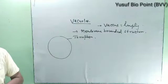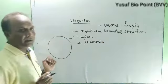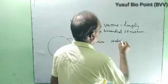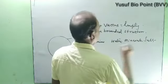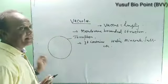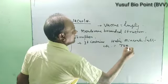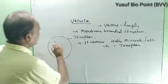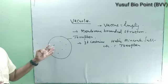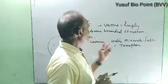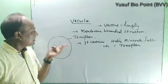The tonoplast is the outer membrane of the vacuole. Inside, it contains fluids in which water, minerals, salts, and other substances are present — this liquid is known as tonoplasm. So tonoplast is the outer membrane and tonoplasm is the liquid found inside the vacuole.